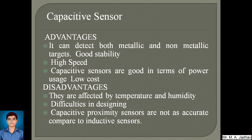The advantages of capacitive sensors are that they can detect both metallic and non-metallic targets, they have good stability, high speed, low power consumption, and low cost. The disadvantages are that they are affected by temperature and humidity, they are difficult to design, and they are not as accurate when compared with inductive sensors.